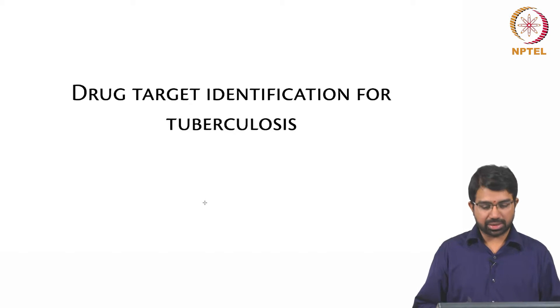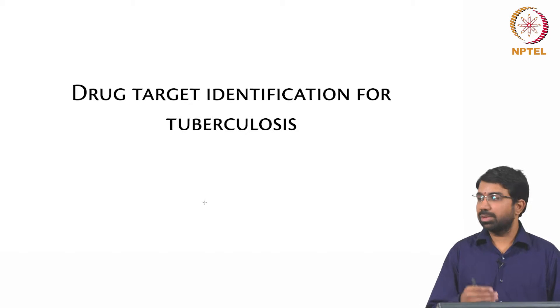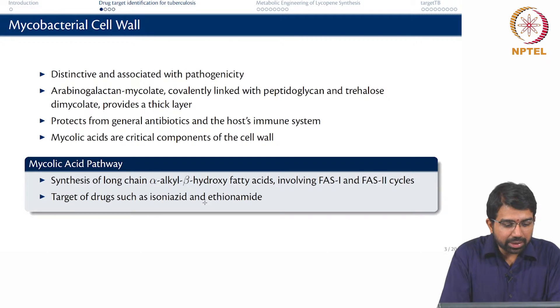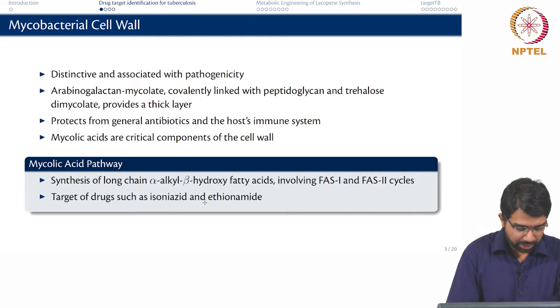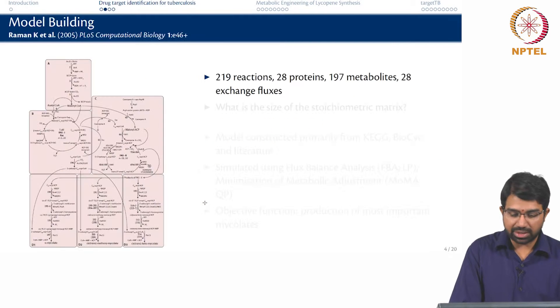So how do you identify such targets? I will show you two approaches, a simple approach that is just based on a single metabolic pathway and a more comprehensive approach that takes into account as much as possible information from the whole genome. The mycobacterial cell wall is very distinctive and it is associated with pathogenicity. It contains arabinogalactan mycolate which is covalently linked with peptidoglycan and trehalose dimycolate which provides a thick layer. This thick layer helps it evade classic antibiotics and also the host immune system. Mycolic acids are critical components of the cell wall. They are long-chain alpha-alkyl beta-hydroxy fatty acids. It is also the known target for drugs like isoniazid and ethionamide.